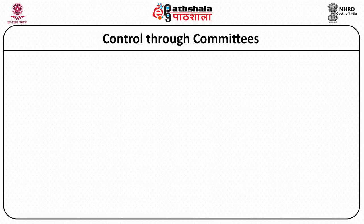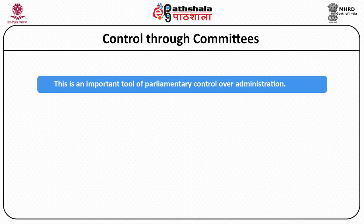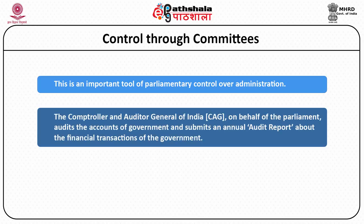The third mode of control exercised by parliament is through the audit system and committees. The Comptroller and Auditor General (CAG) is appointed on behalf of parliament to audit government accounts and submit an annual audit report on financial transactions. The CAG's report highlights improper, illegal, unwise, uneconomical, and irregular expenditure. As an agent of parliament, the CAG is responsible only to parliament, thereby securing the financial accountability of the government.